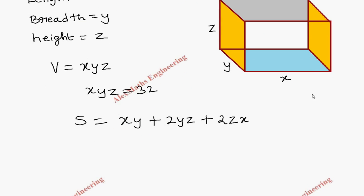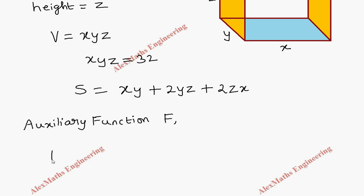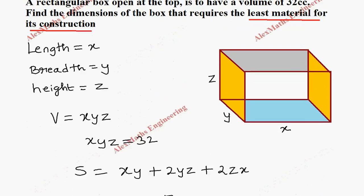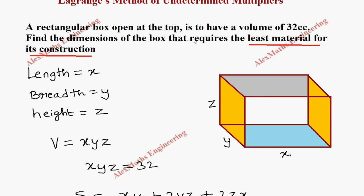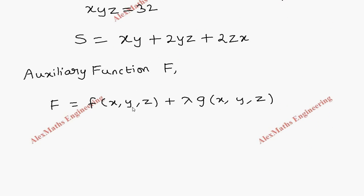Now we have to write the auxiliary function F. This auxiliary function F is made up of two parts: one is a function in terms of x, y, z, and the condition which is lambda times the condition. Since they are asking about the least material for construction, they are asking about the surface area as a least, so this F(x,y,z) is surface area.